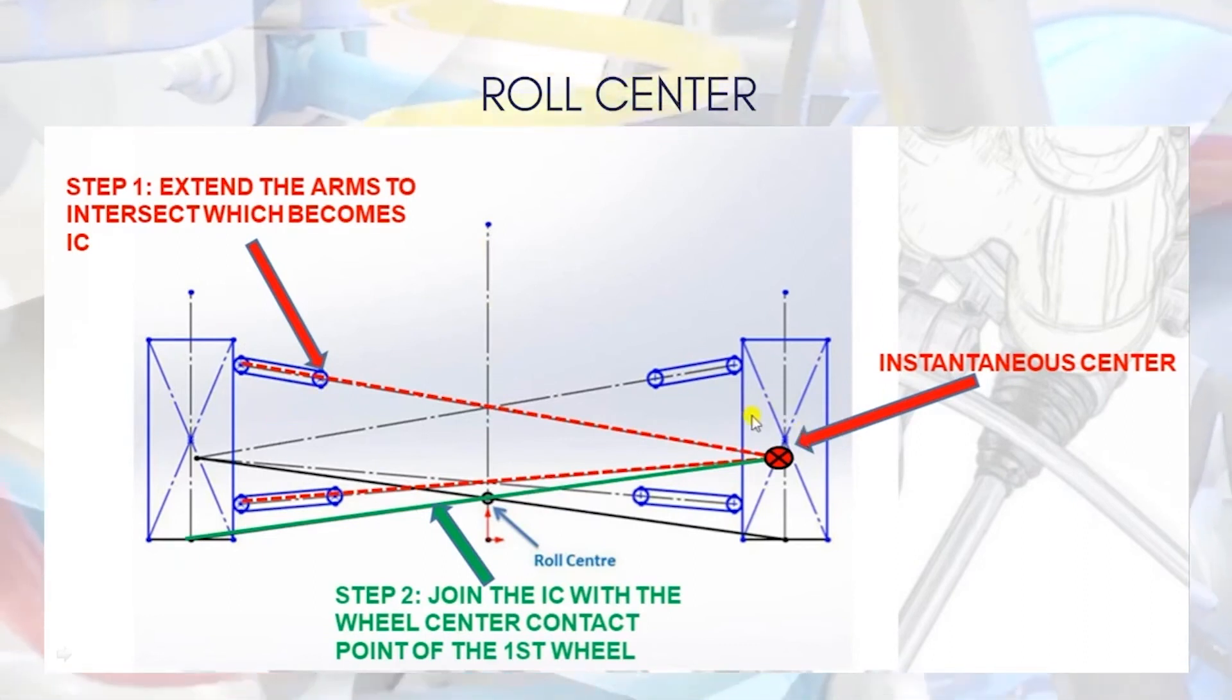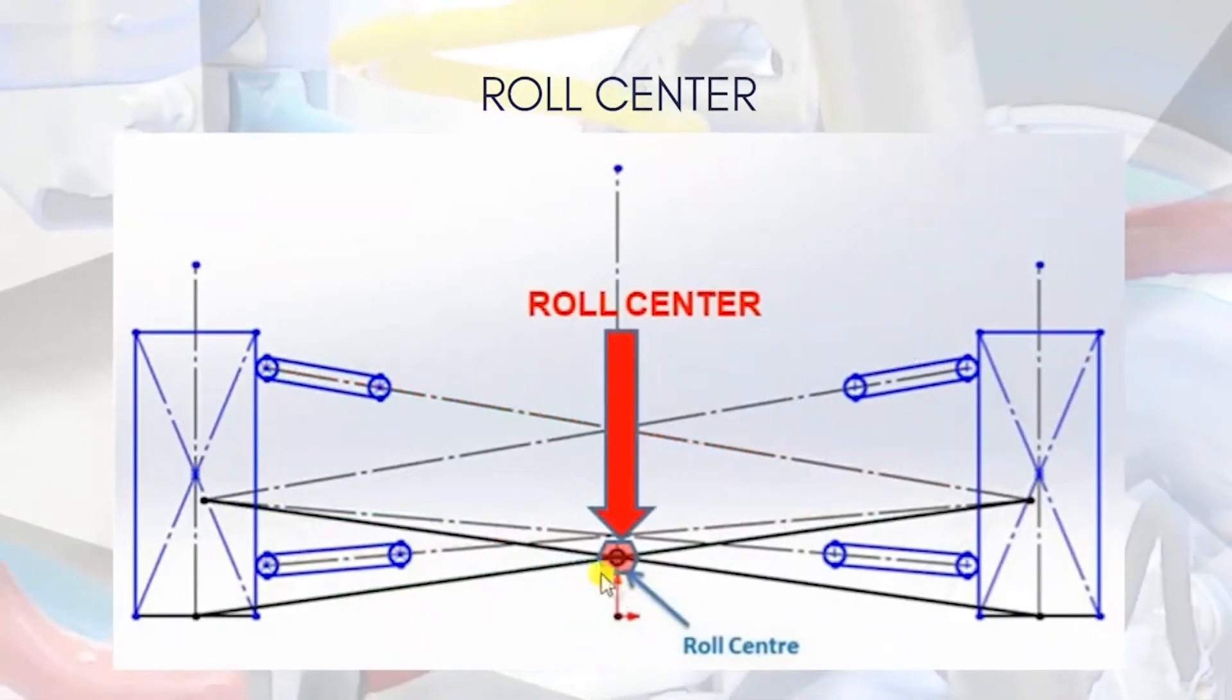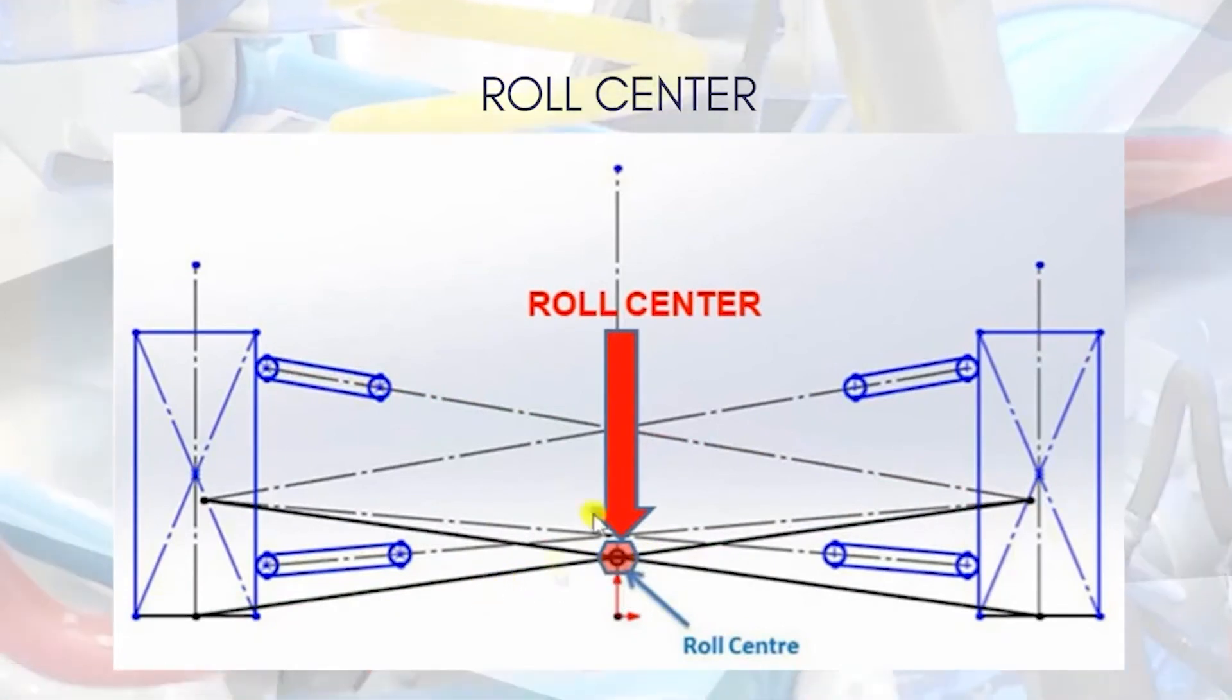Symmetric in the sense it's going to be exactly same along this vertical central axis. So wherever this line intersects the vertical axis, that is going to be the roll center of this instantaneous center line. Wherever it intersects your vertical axis, that is going to be the roll center.